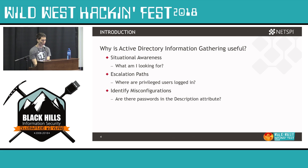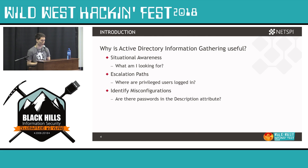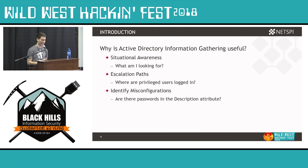The next thing is escalation paths — where are privileged users logged in? Where are highly trafficked servers? If you've ever used Bloodhound or Sharphound, you know that being able to see these escalation paths visually is really impactful. And then there's identifying silly misconfigurations — checking that users who shouldn't be in groups with administrative privileges aren't in those groups. Even things like finding passwords in description attributes when pulling back users. Nine times out of ten those passwords won't work, but on that tenth time it can really make a difference — and even when they don't work, they give insight into what sysadmins are doing with their passwords.